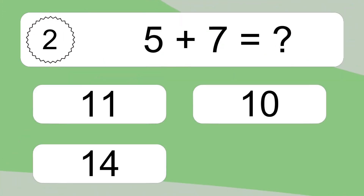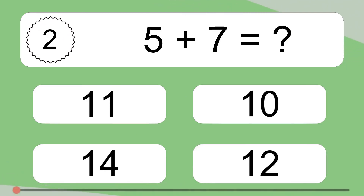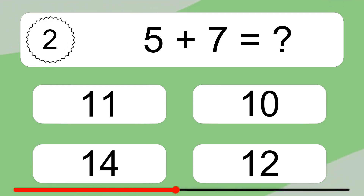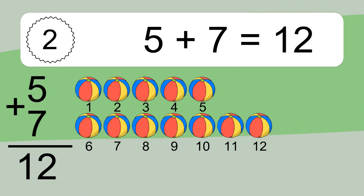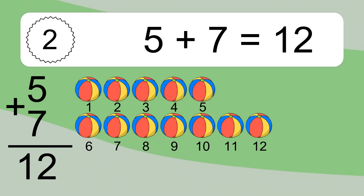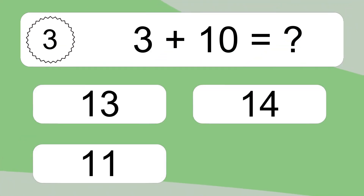5 plus 7 equals what? 5 plus 7 equals 12. Let's count it. 1, 2, 3, 4, 5, 6, 7, 8, 9, 10, 11, 12.